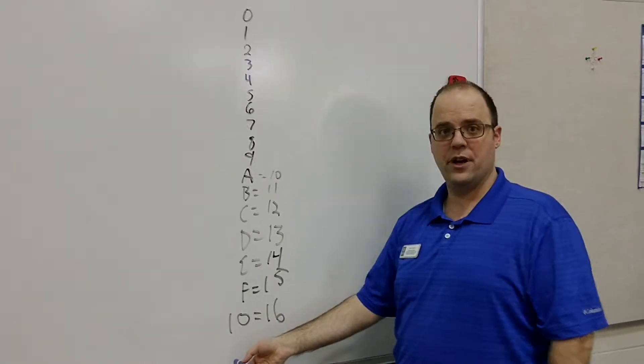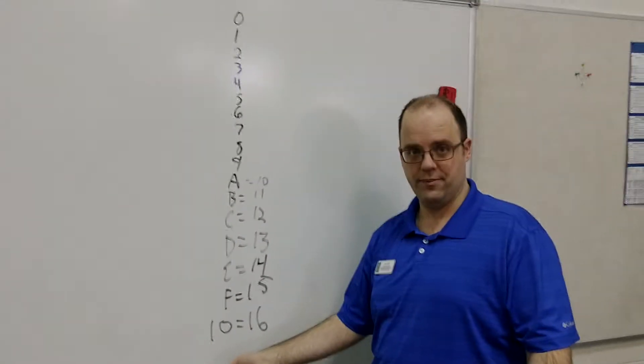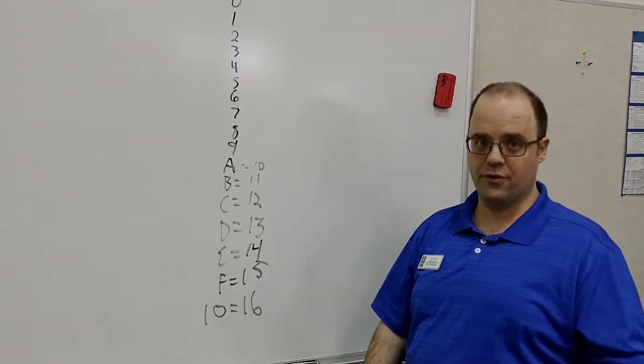And I keep going and going and going and counting. So eventually I'll get to 1F, and then that transitions over to 20. If I get to 3F, then I'll transition over to 40.